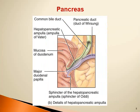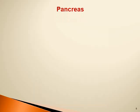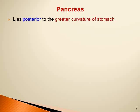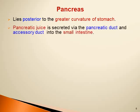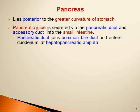The pancreatic juice will be produced by the pancreatic acini. It will flow through the ducts and finally reach the main pancreatic duct, which will join the common bile duct to form the ampulla of Vater, opening into the second part of the duodenum. This opening is guarded by the sphincter of Oddi. The pancreatic juice is also secreted via an accessory duct into the small intestine.